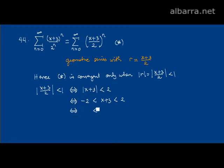If we add -3 to all parts, we have -5 < x < -1. So we know that if x is in the interval from -5 to -1, then |x+3|/2 will be less than 1.